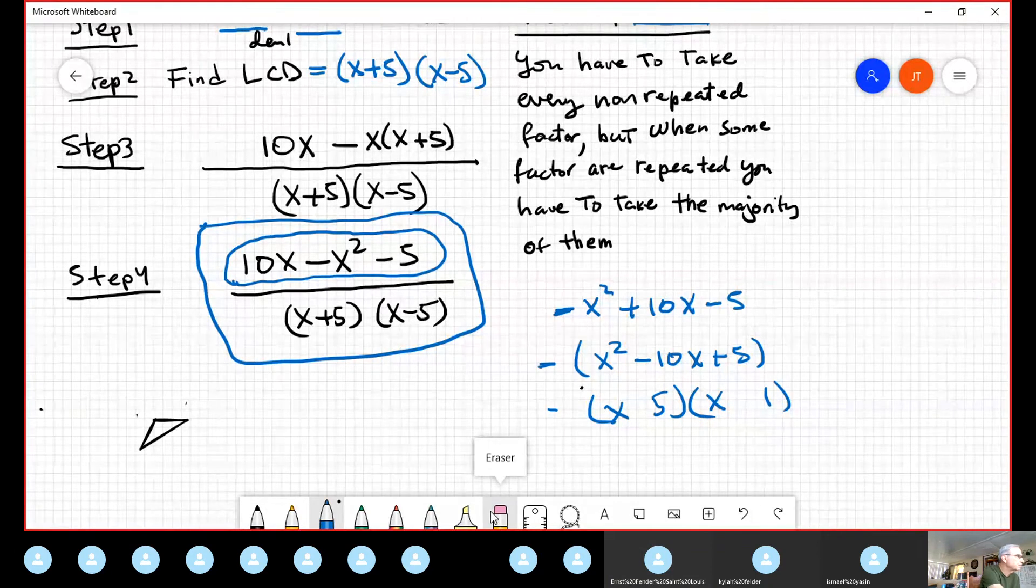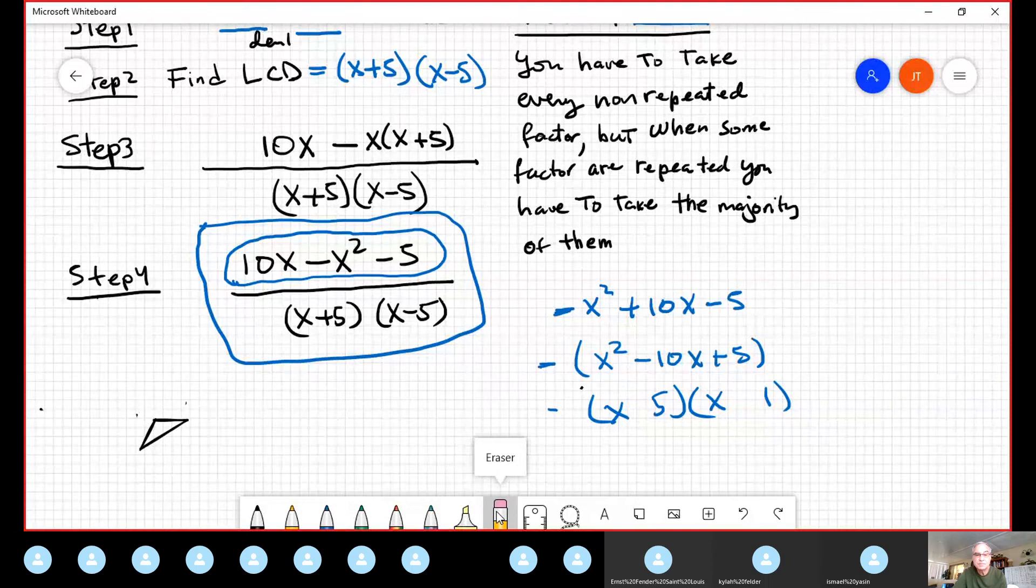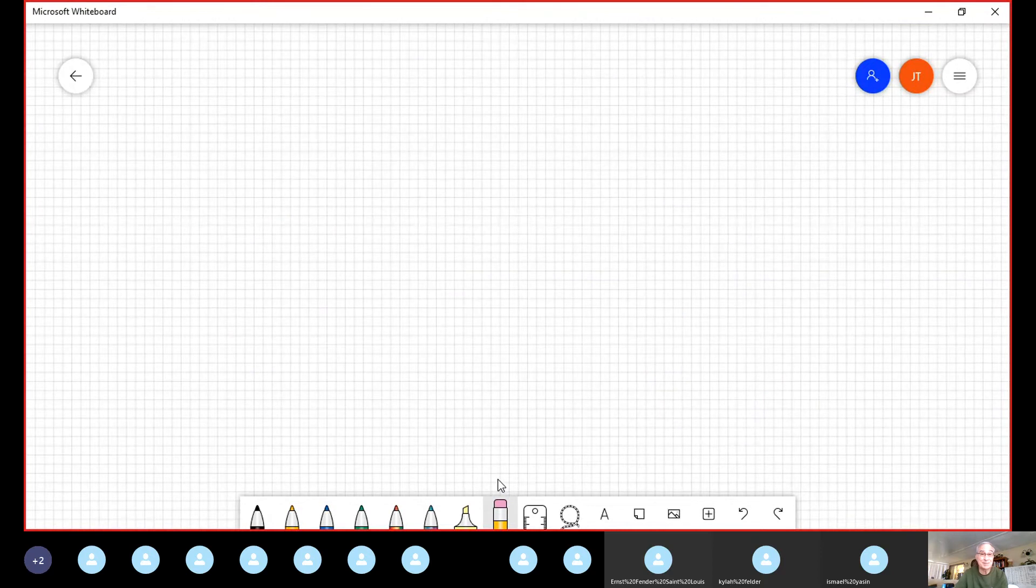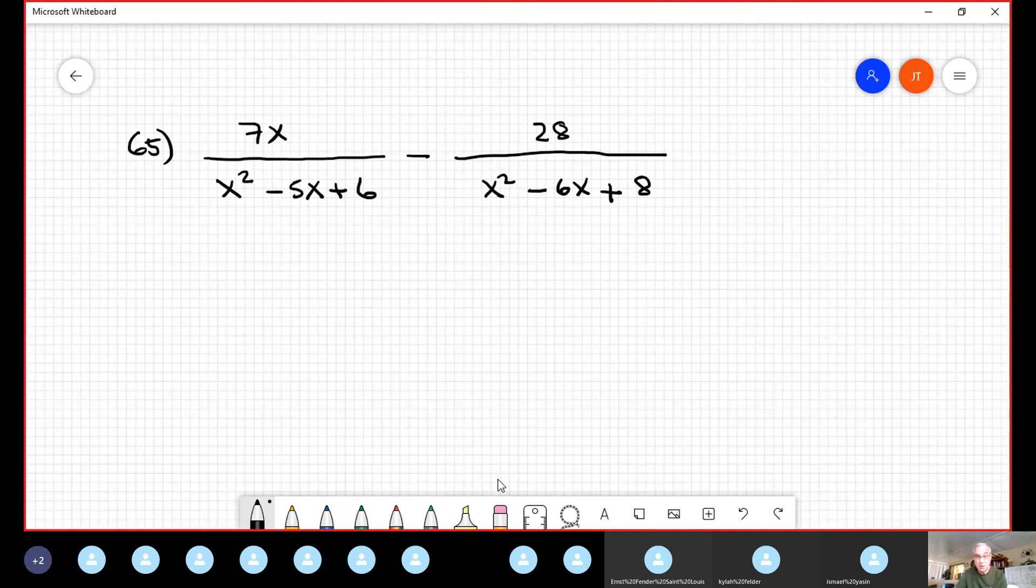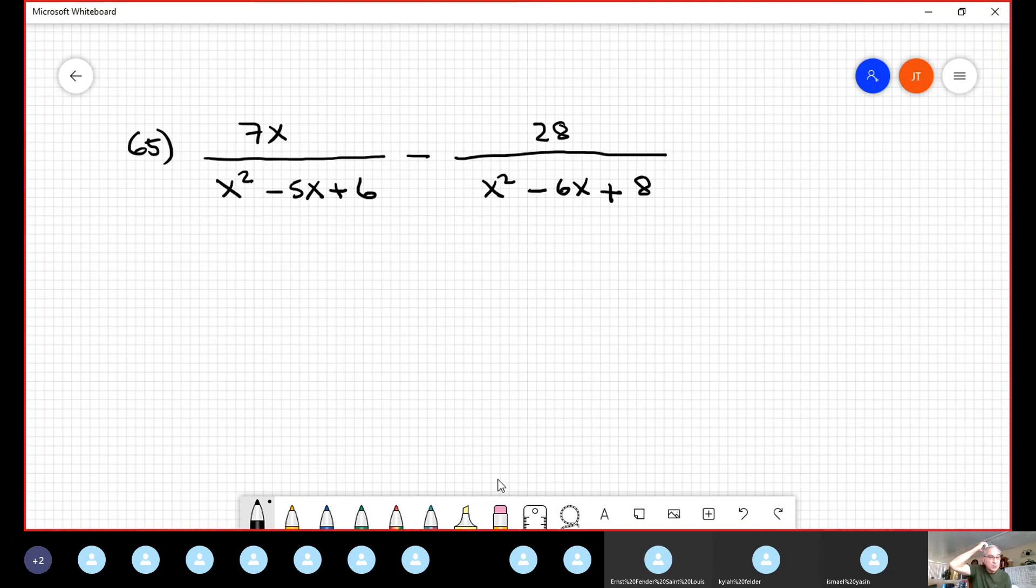Let's move on to the 65. 65 is more interesting. You understand. The addition and subtraction is a little bit more complicated. Because we have more extra. 65 is 7x over x squared minus 5x plus 6 minus subtraction, 28 over x squared minus 6x plus 8. It's obvious. We cannot combine the top part because the bottom part is different. But you need to express everything using common denominator.